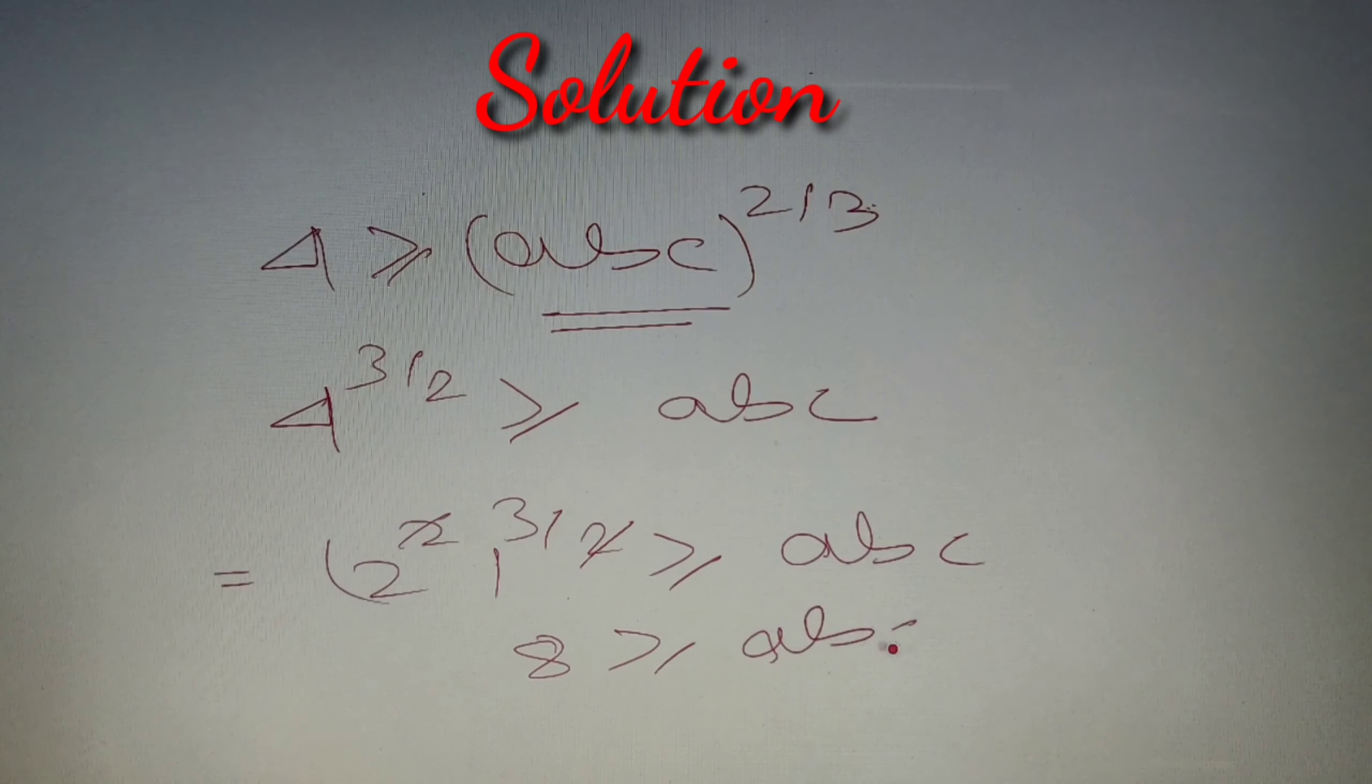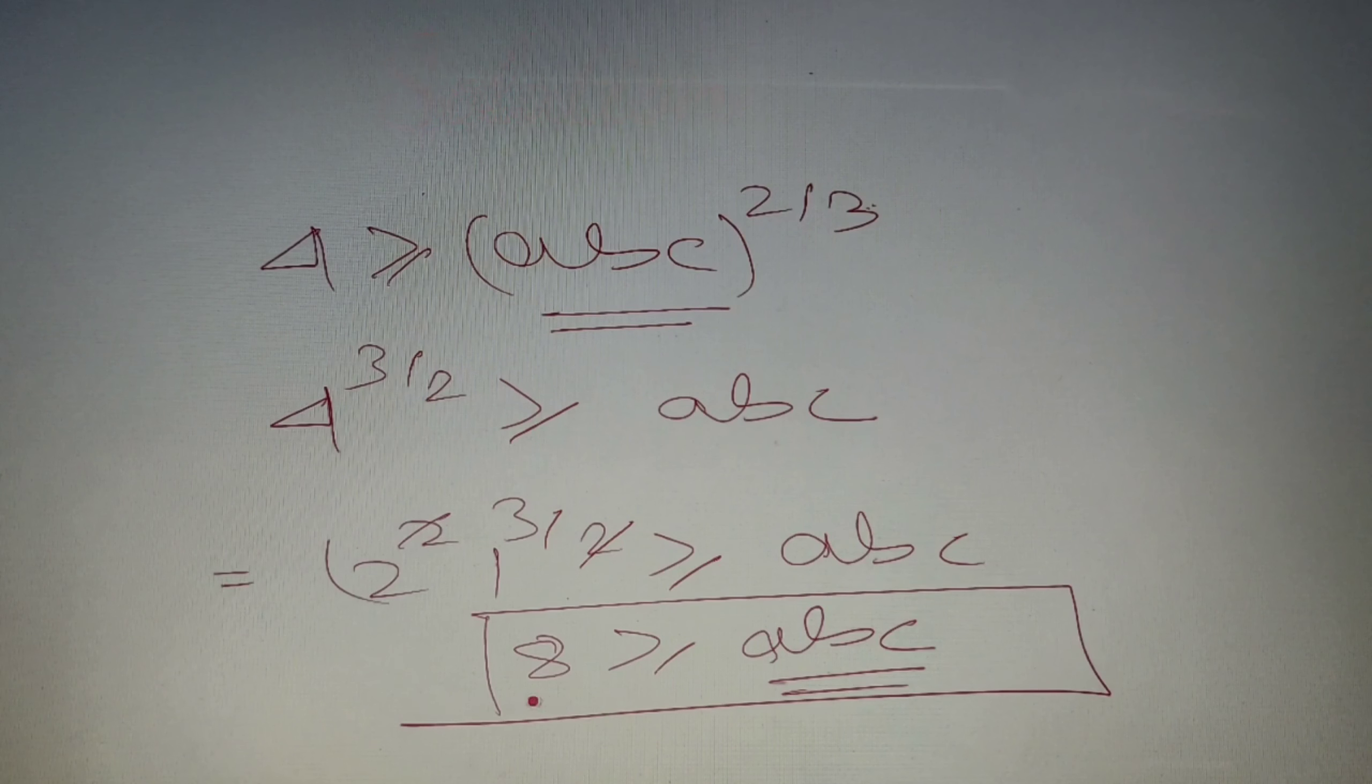So we have got the maximum value of abc as 8, and according to our given question it is option number A. So the maximum value of abc according to our given question is option number A: 8.